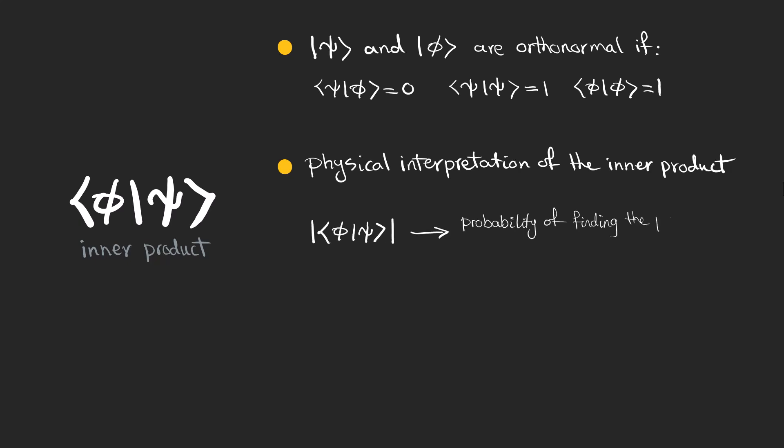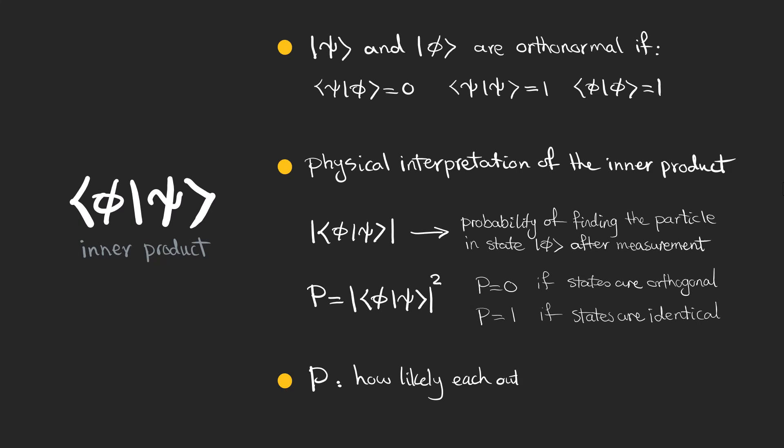The magnitude of inner product is directly related to the probability of transitioning from one state to another. If a system is in a state psi, the probability of finding it in a state phi after measurement is given by this probability. This probability is 0 if the states are orthogonal and completely distinct, and it is 1 if they are identical. It's very important to know that this probability tells us how likely each possible outcome is before we perform the measurement, and we haven't done a measurement yet.